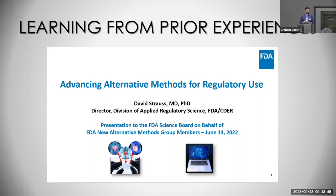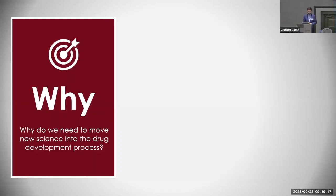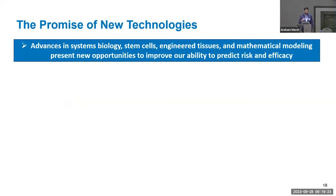I'm going to draw on two broader experiences. The first involves a talk we gave to the FDA Science Board a little over a year ago, in June 2022, on the topic of advancing alternative methods for regulatory use. We have a cross-agency group working on this topic — thinking about not just the drug development space but across FDA how we can advance alternative methods.